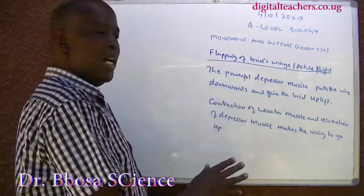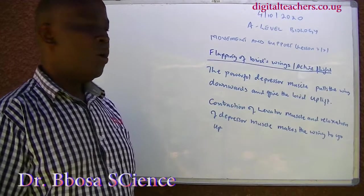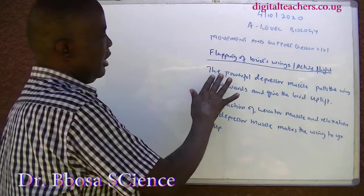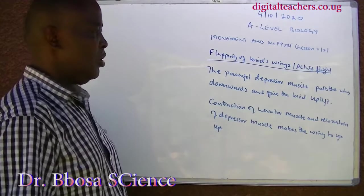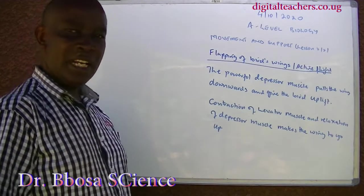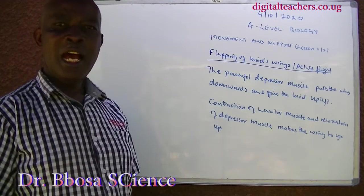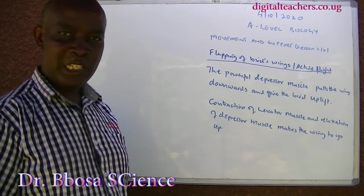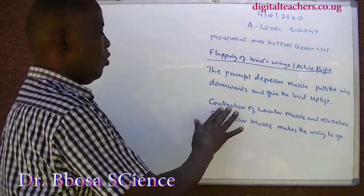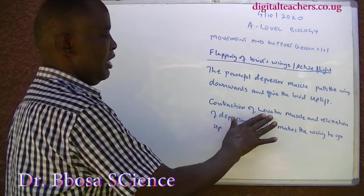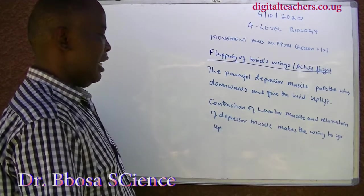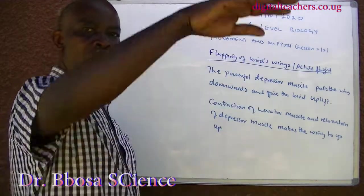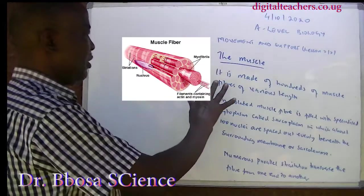Flapping of a bird's wings in active flight: the powerful depressor muscle pulls the wings downwards and gives the bird uplift. Contraction of the levator muscle and relaxation of the depressor muscle makes the wings go up.